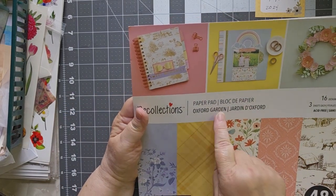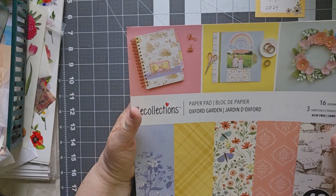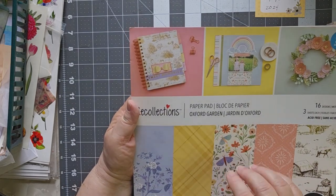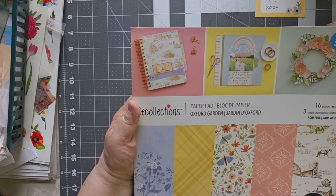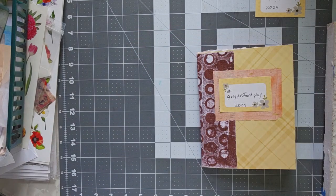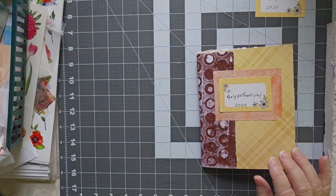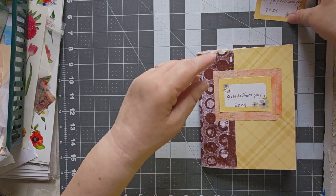This cover page comes from the Recollections Oxford Garden. I have been, I really like this and I think I made a whole journal out of this and then sold it. I will be looking to maybe make another journal out of what remains, but I made the cover out of one of the pages.